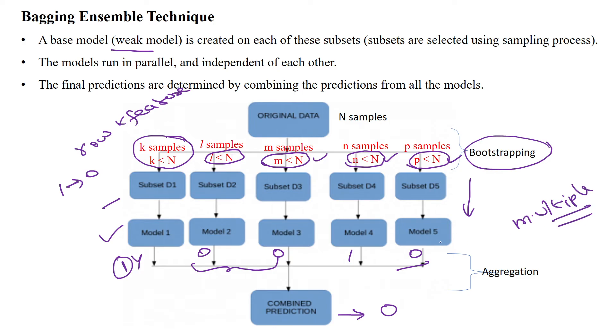Multiple weak learners produce more accurate values. This is called the bagging technique. Thanks for watching.